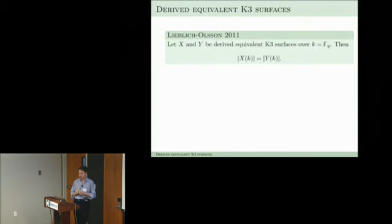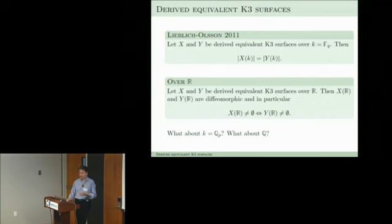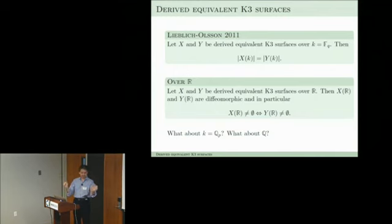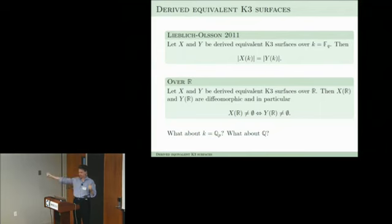There is some structure underlying all this: the Picard lattices as Galois modules are isomorphic, so you don't get new Galois-theoretic invariants. The Brauer groups are the same because they come from transcendental lattices. Also, if one has a zero-cycle of degree 1 the other does too. There are more good news: Lieblich-Olsson proved that over a finite field, derived equivalent K3s have the same number of rational points. Over the reals, if one has real points the other does too.